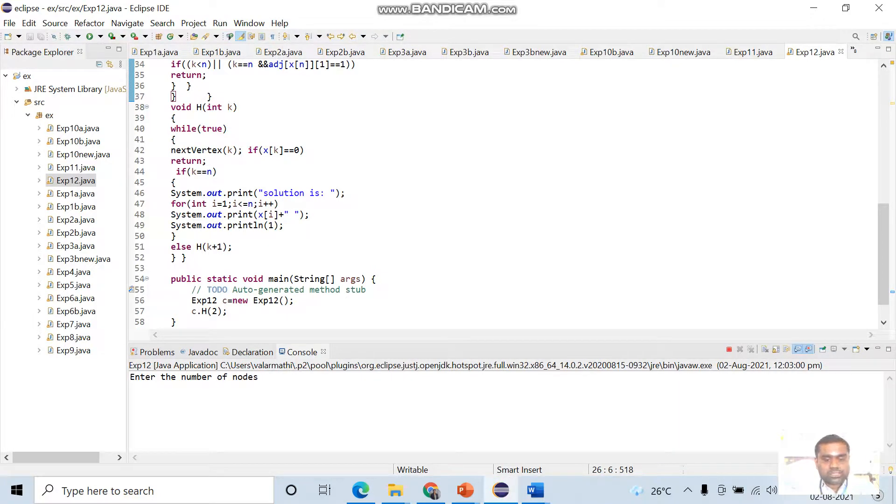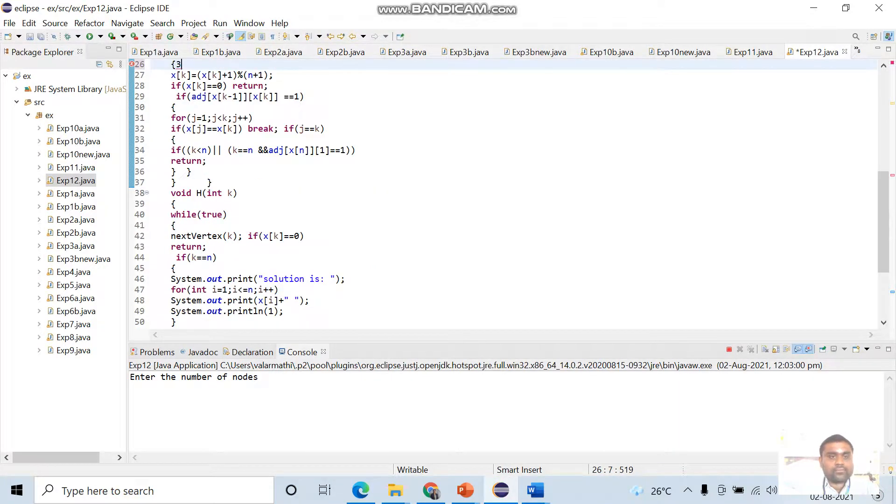Number of nodes: three nodes I will give. We have to check the adjacency matrix. As I said before, the diagonal elements should be zero. So: 0, 1, 2, 1, 0, 3, 4, 0.